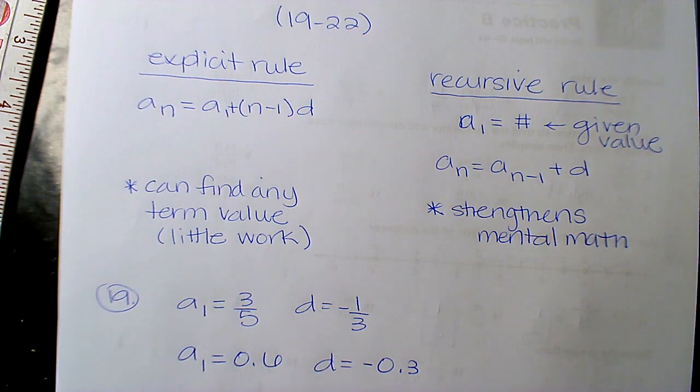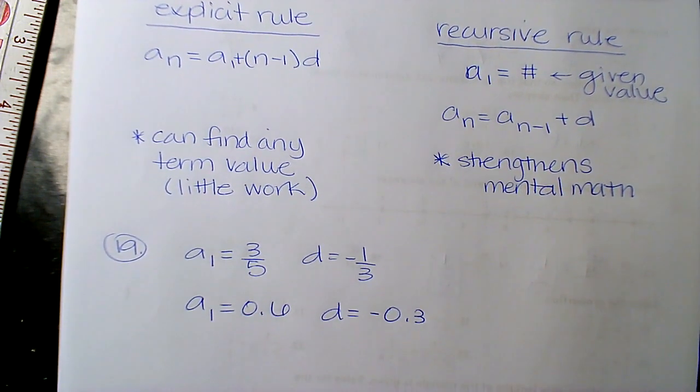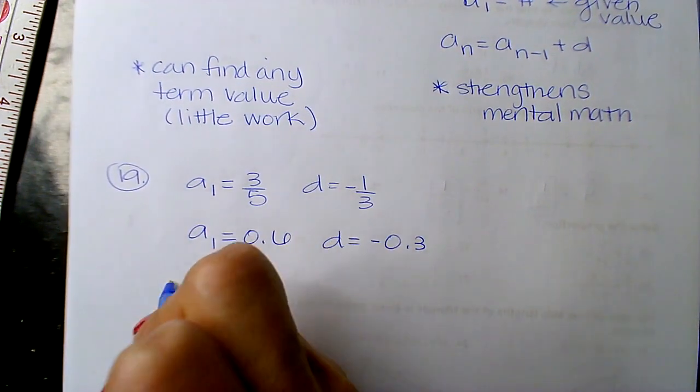Okay. So looking at 19, we chose to go decimals. All right. We're gonna write the explicit and the recursive for both so you can see the way it looks. I'm yelling over that word. Oh my goodness. So let's do explicit first.